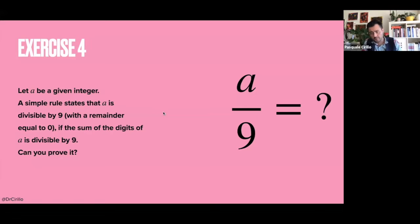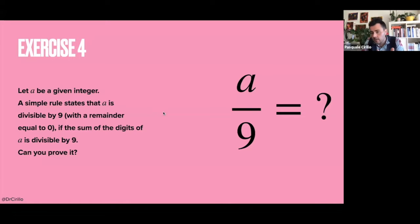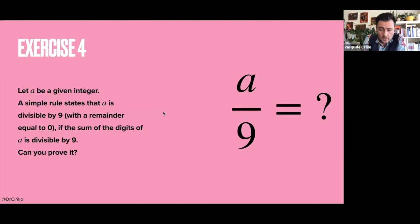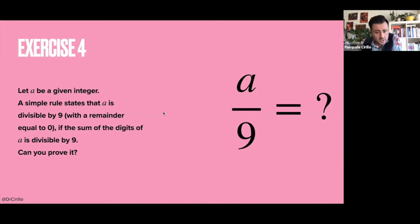It is clear that if I take 12, one plus two is three, and three is not divisible by nine, so I cannot get a remainder equal to zero. If I take 18, which is divisible by nine — we clearly know it's nine times two — and if you apply the rule: one plus eight equals nine, and nine is divisible by nine, we get a remainder equal to zero. So if I want to know if my integer a is divisible by nine, I take the sum of the digits of a, and if that sum is divisible by nine, then a is divisible by nine.